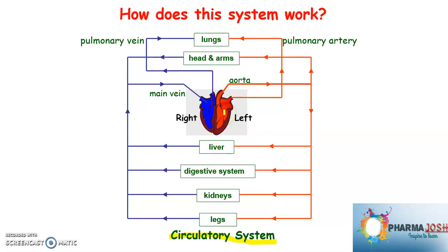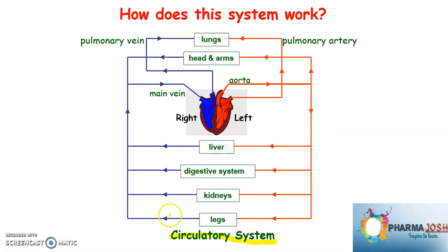The left side of the heart transfers blood into blood vessels called arteries, which carry blood to different parts of the body — such as the liver, digestive system, kidneys, legs, and many other parts. From these parts, blood is returned to the heart through blood vessels.